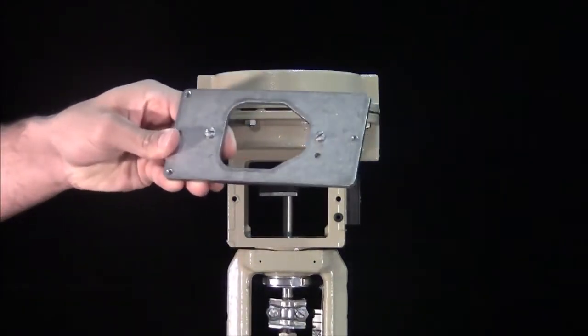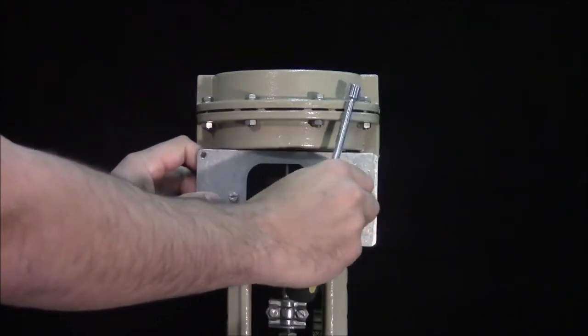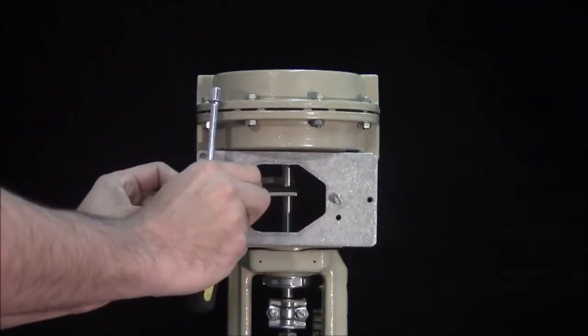Fasten the mounting plate to the integrated positioner mount. The narrow side points to the right, towards the pneumatic connections.